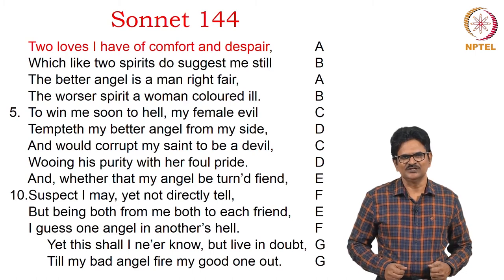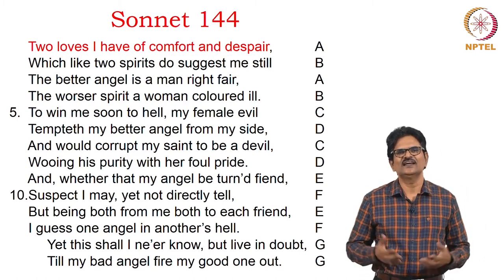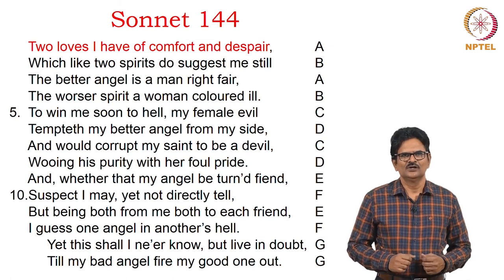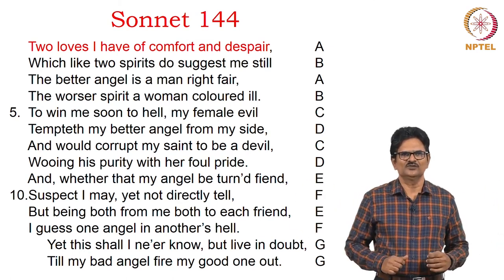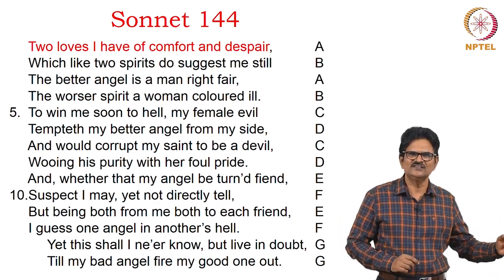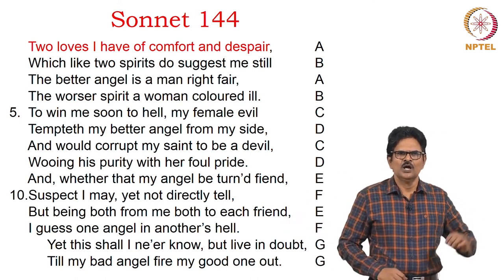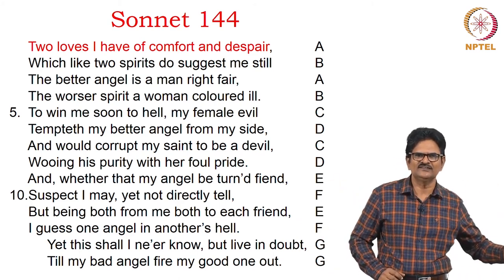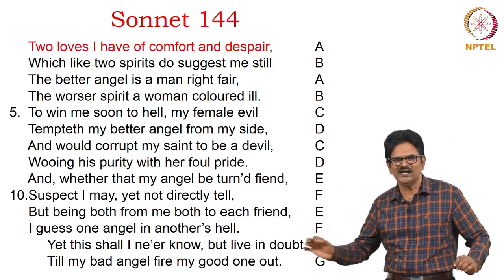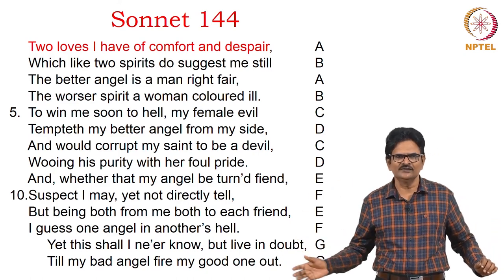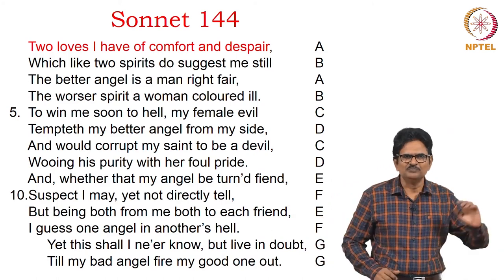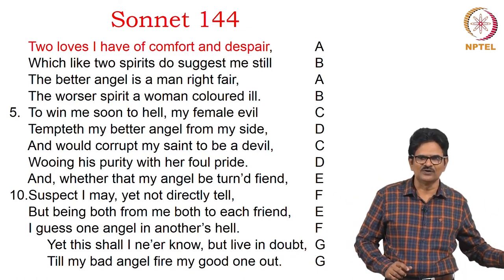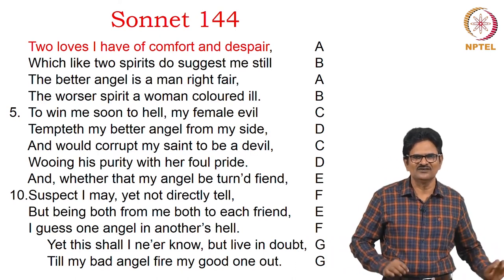We come to the third and last poem chosen to discuss as part of Shakespearean sonnets — Sonnet 144. 'Two loves I have of comfort and despair, Which like two spirits do suggest me still, The better angel is a man right fair, The worse spirit a woman colored ill, To win me soon to hell, my female evil Tempteth my better angel from my sight, And would corrupt my saint to be a devil, Wooing his purity with her foul pride. And whether that my angel be turned fiend, Suspect I may, yet not directly tell, But being both from me, both to each friend, I guess one angel in another's hell. Yet this shall I never know, but live in doubt, Till my bad angel fire my good one out.'